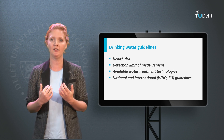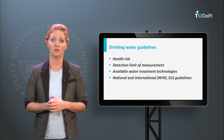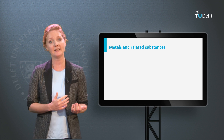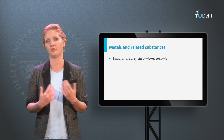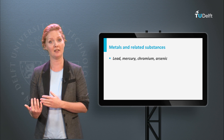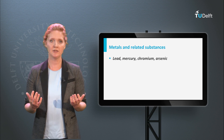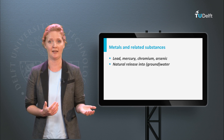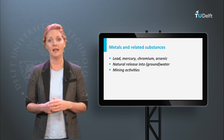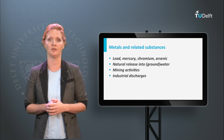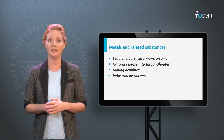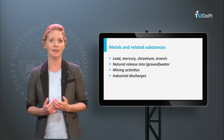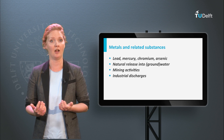Let's briefly go through the different chemical contaminants that can threaten safe drinking water supply. Metals and related substances include well-known heavy metals such as mercury and lead, but also the metalloid arsenic. These contaminants originate from different sources, including natural release into the water from sediments, mining activities, and industrial or domestic discharges. These metals and related substances pose a serious threat to human health, as they are often carcinogenic and may cause illnesses to the bladder, lungs and other organs.